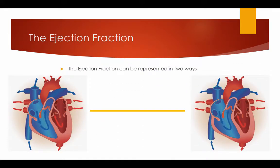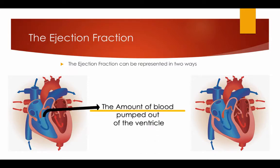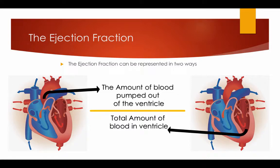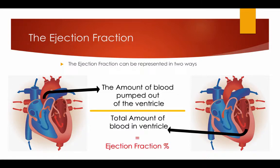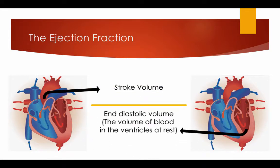The ejection fraction can be represented in two ways. First, the amount of blood pumped out of the ventricle divided by the total amount of blood in the ventricle — this gives you the ejection fraction as a percentage. The other way is stroke volume divided by the end diastolic volume (the volume of blood in the ventricles at rest), which also gives you the ejection fraction.